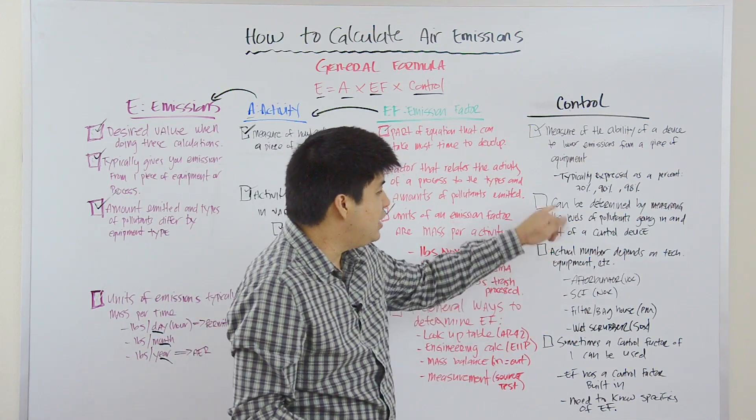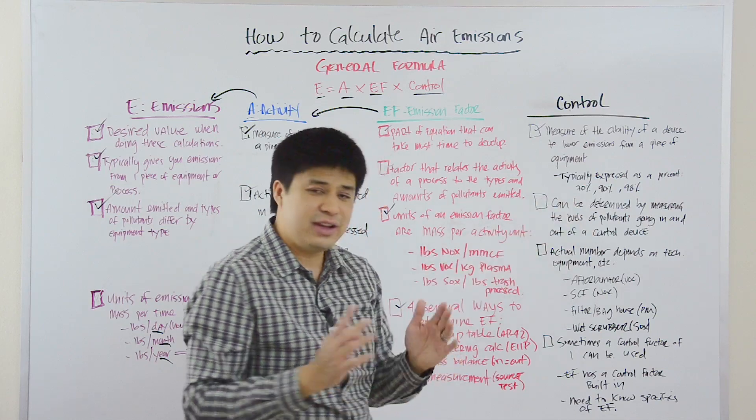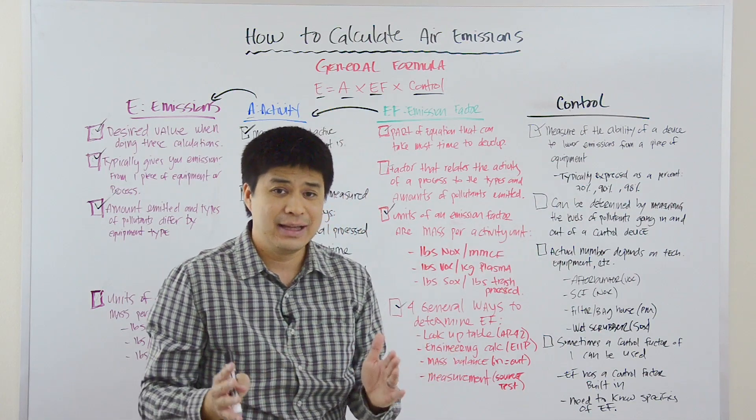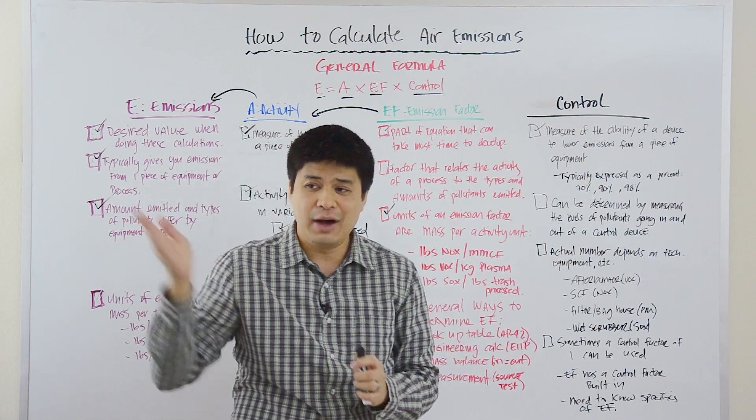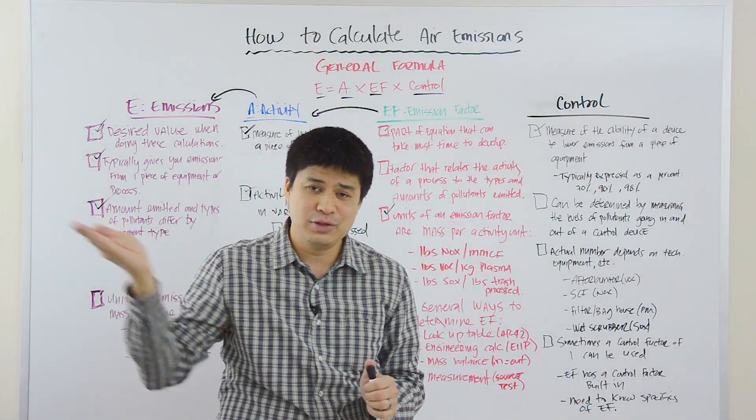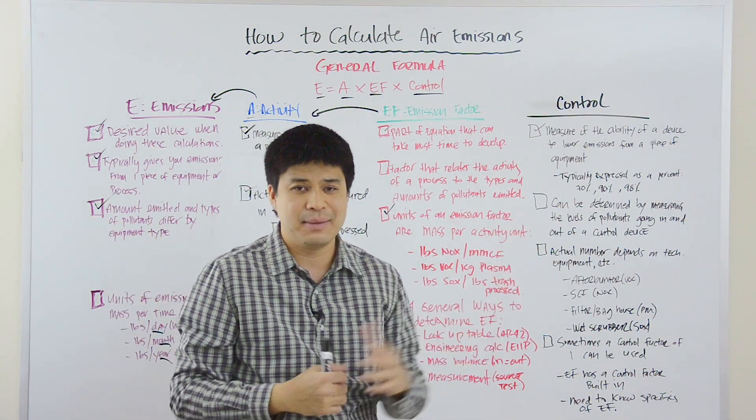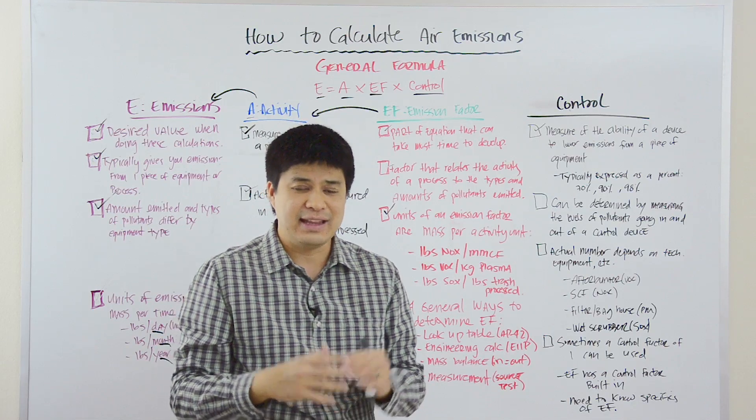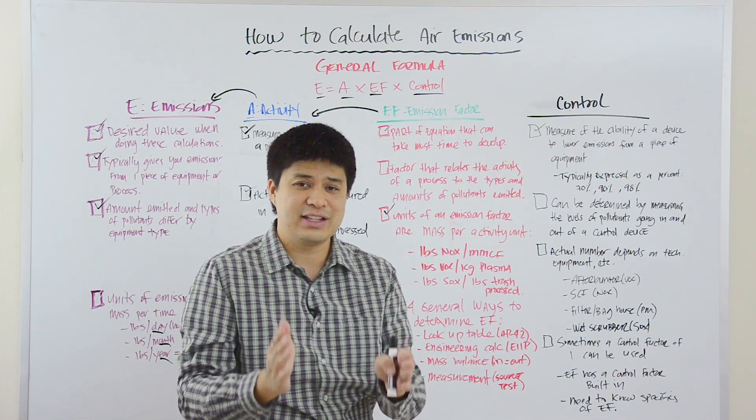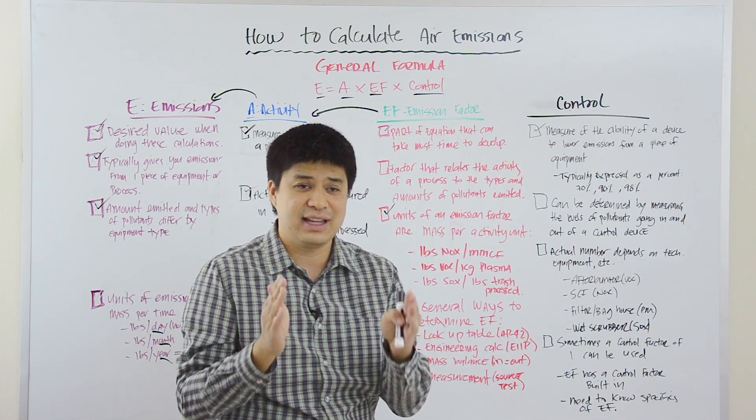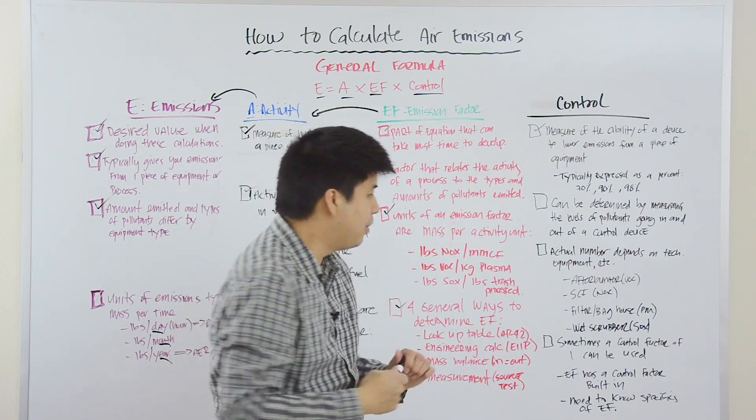And to determine these control factors, you have to do it by testing. And you would test how much pollution is going in, how much pollution is coming out. You take the ratio and then you would know that that control device or that piece of technology can control these emissions by a certain number.